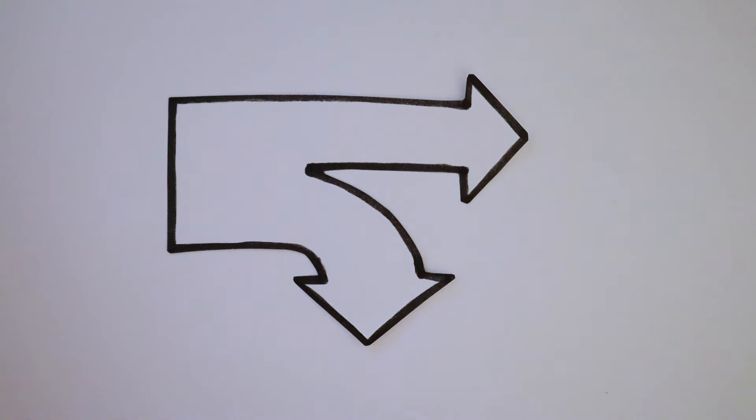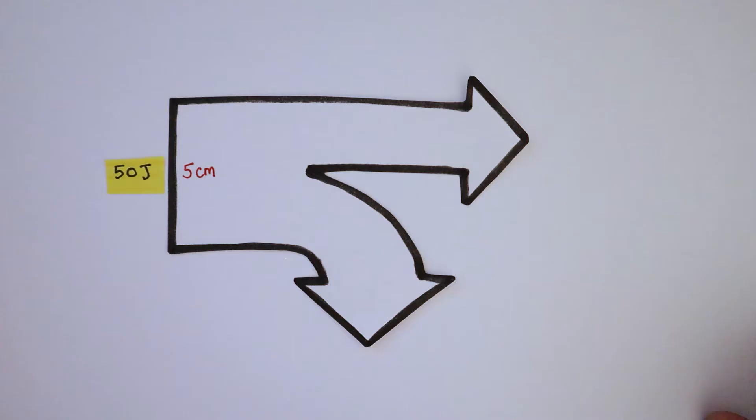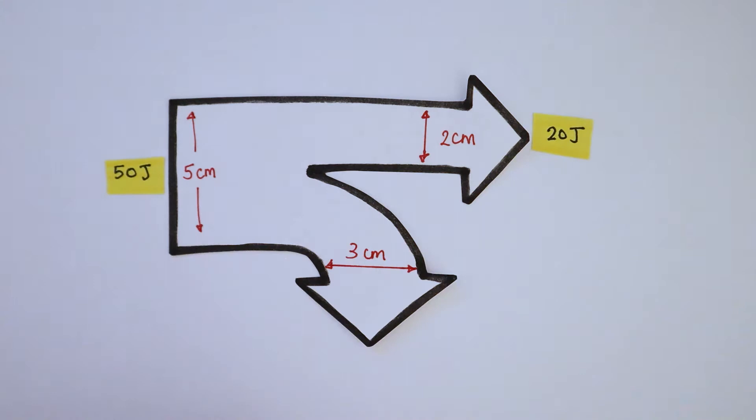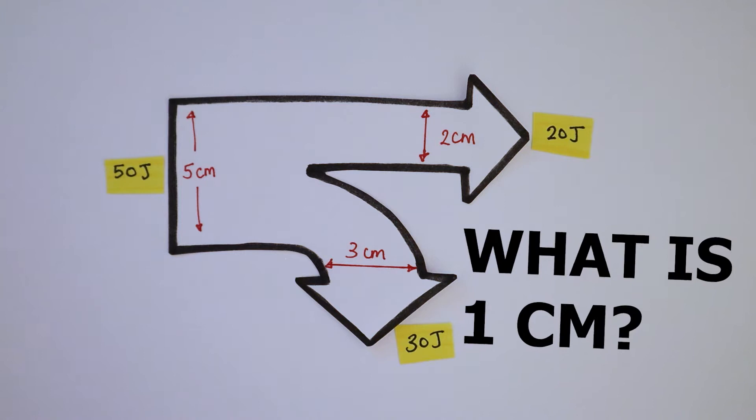Sankey diagrams are sometimes drawn to scale. For this particular Sankey diagram, 5 cm represents 50 joules, 2 cm represents 20 joules, and 3 cm represents 30 joules. So what does 1 cm represent? 1 cm represents 10 joules.